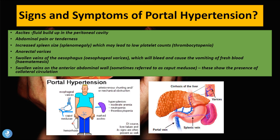What are the signs and symptoms of portal hypertension? These patients may suffer from ascites, which is the fluid buildup in the peritoneal cavity. When these vessels become so full of fluid they spill out into the peritoneal cavity, the abdomen becomes enlarged, causing pain and tenderness. There will also be an increase in spleen size called splenomegaly — when the splenic vein has backflow of blood the spleen continuously fills with blood and starts to enlarge and hyper-function.